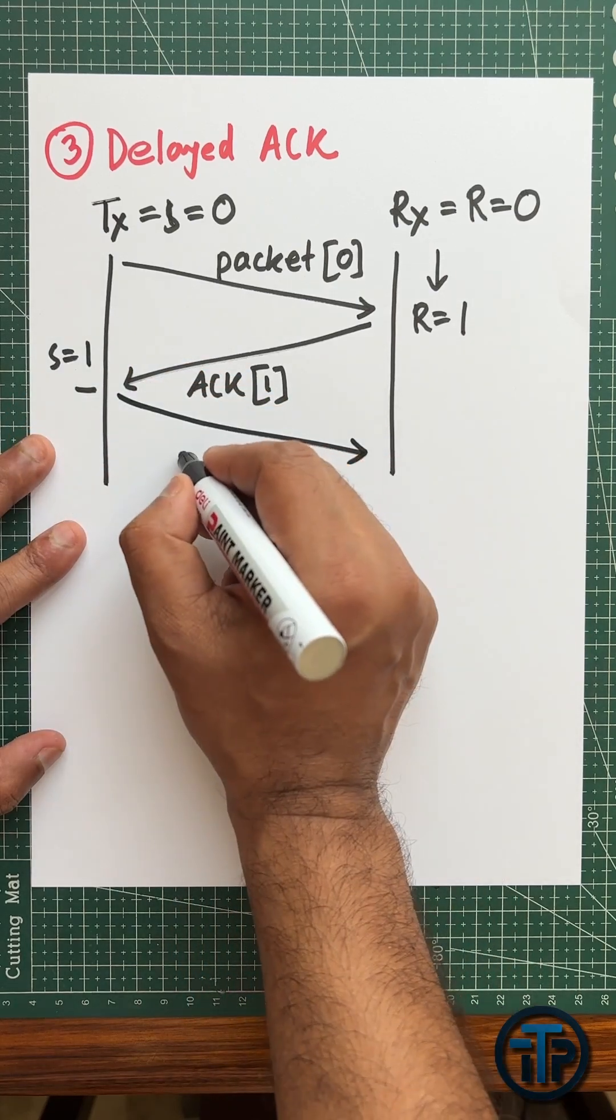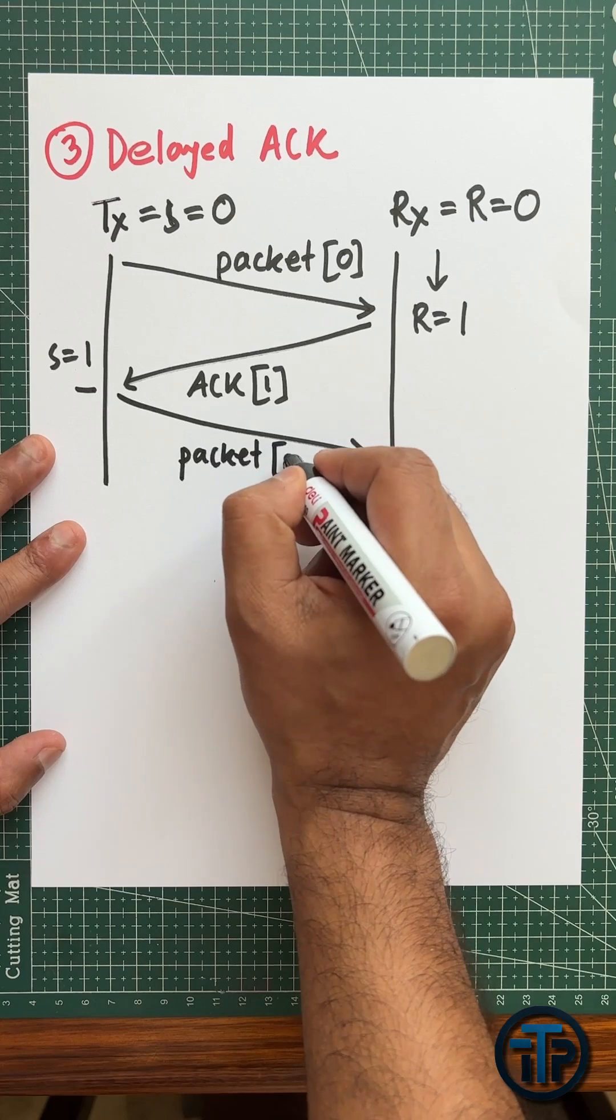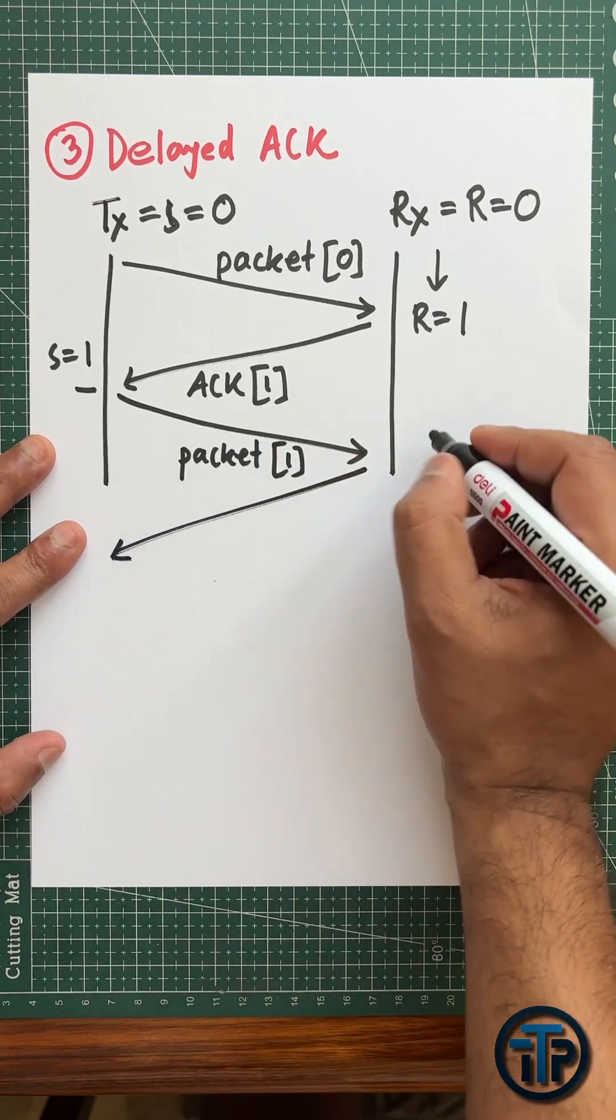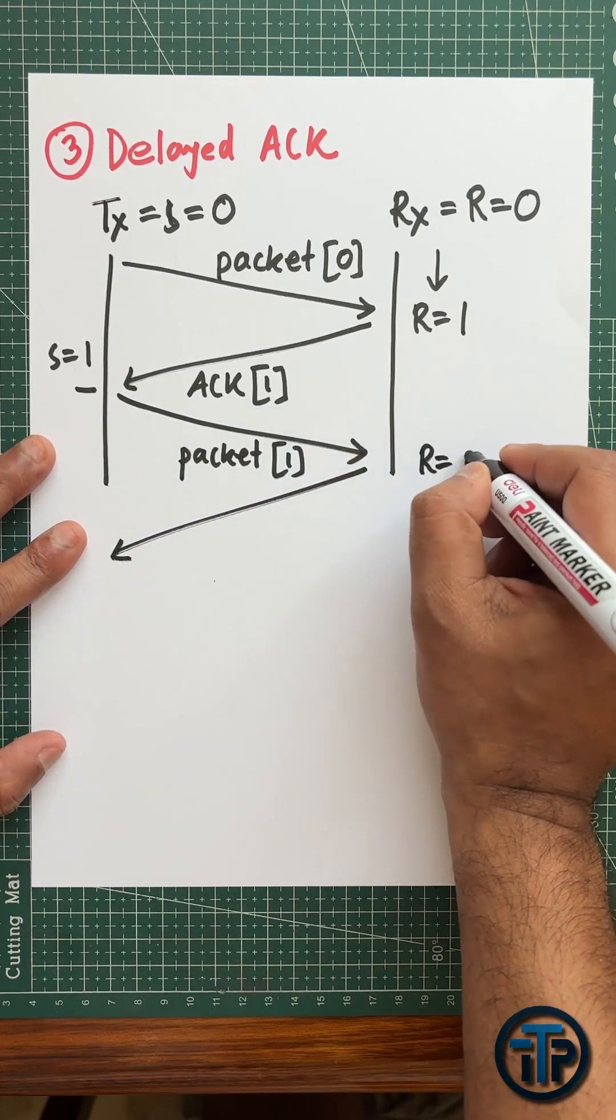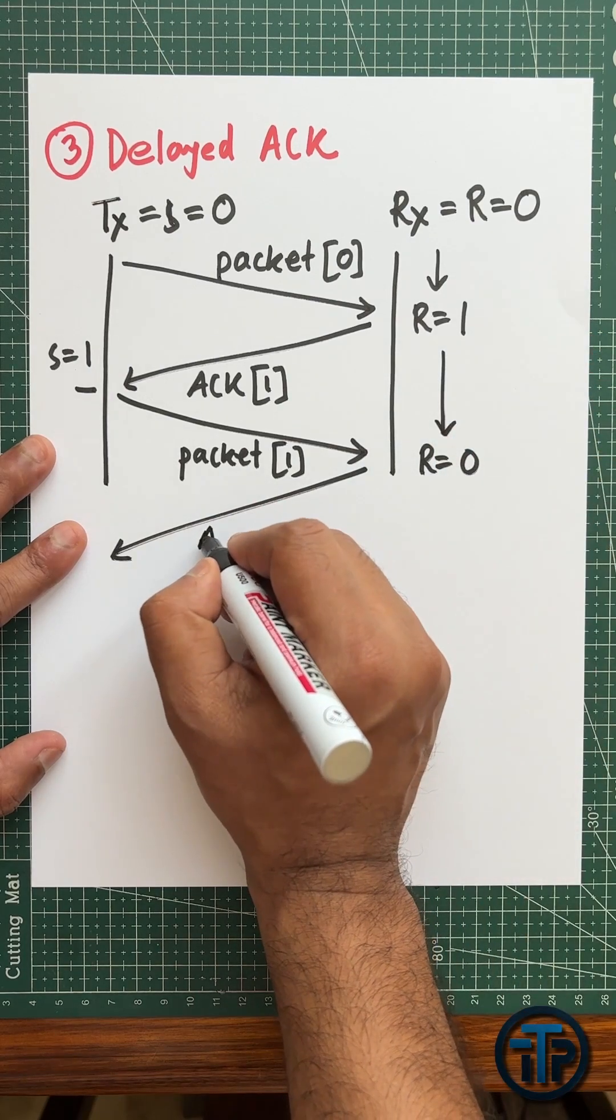And then the transmitter side, when it received the acknowledgement one, it is changing its value from zero to one and sending the packet one. Also in the receiver side, when it receives packet one, it exchanges its value, the r value, to zero.